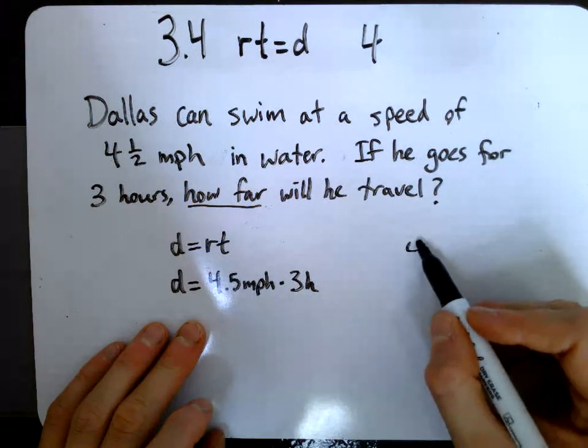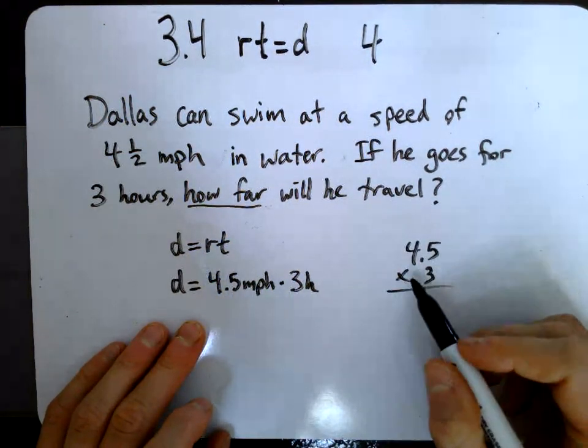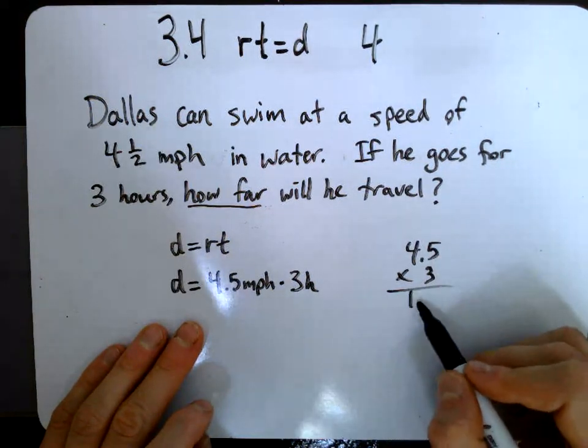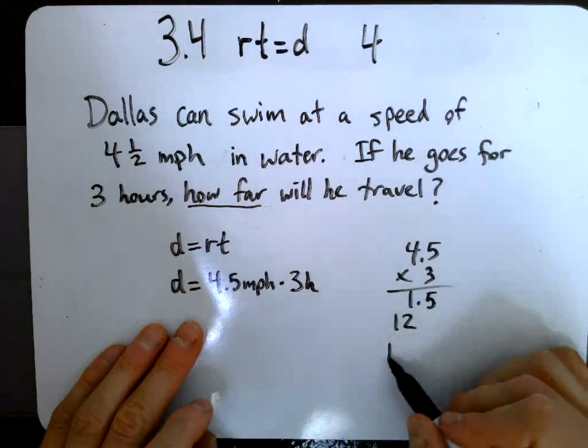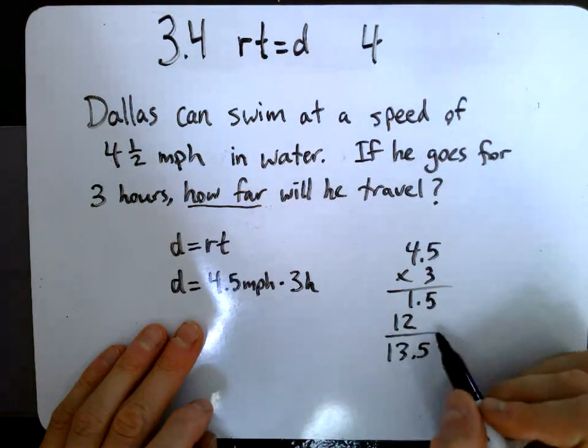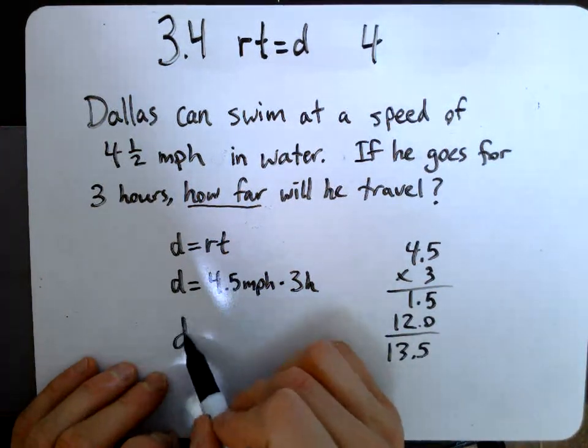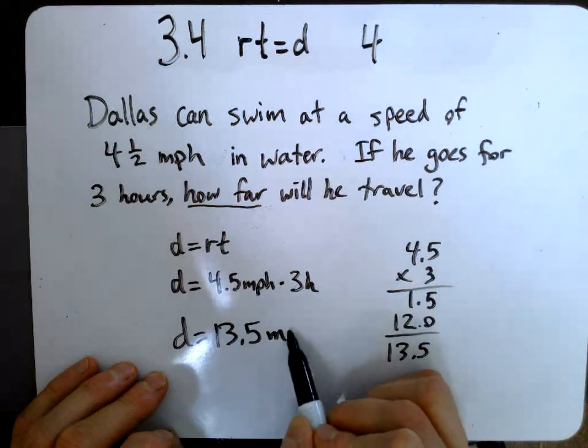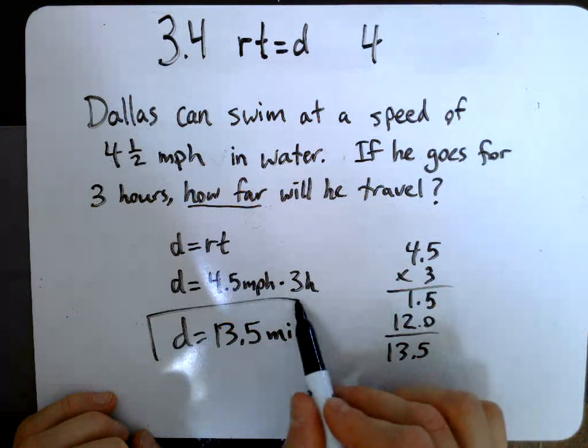Now I just need to work out 4.5 times 3. Hopefully you did this on your own. Three times 5, that's actually 1.5, right? And then that's 12, so you have 13.5. So the distance he has traveled is 13.5 miles. Let's make sure we always put units on our answers.